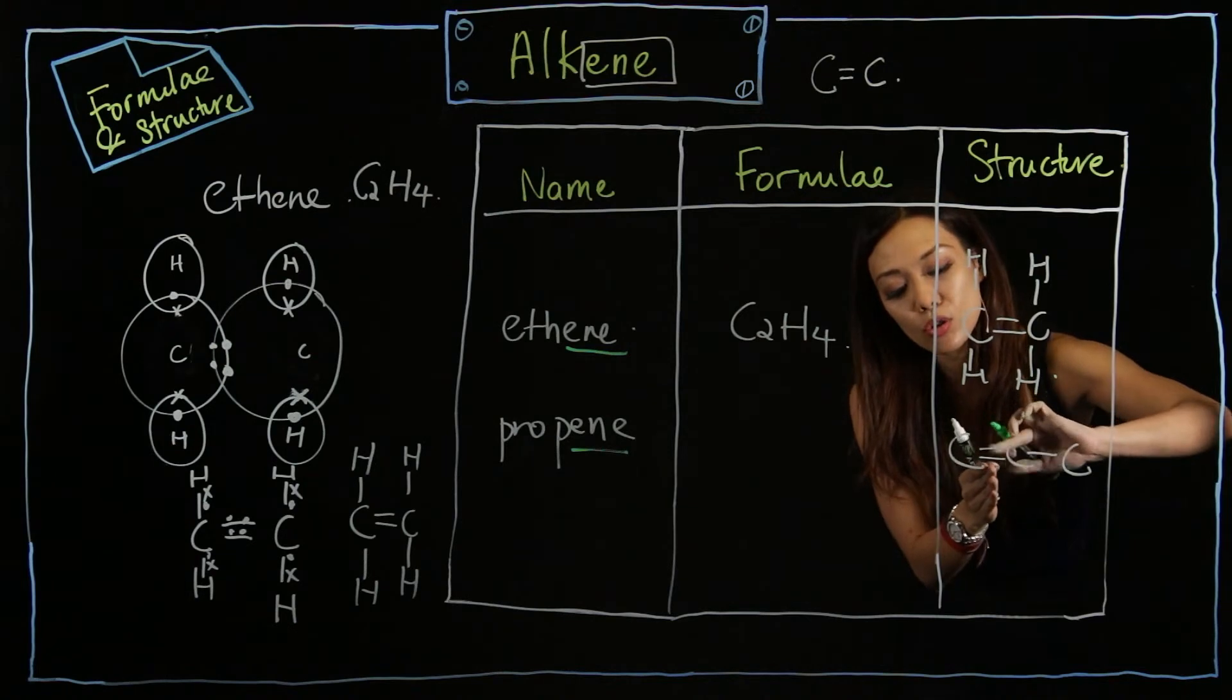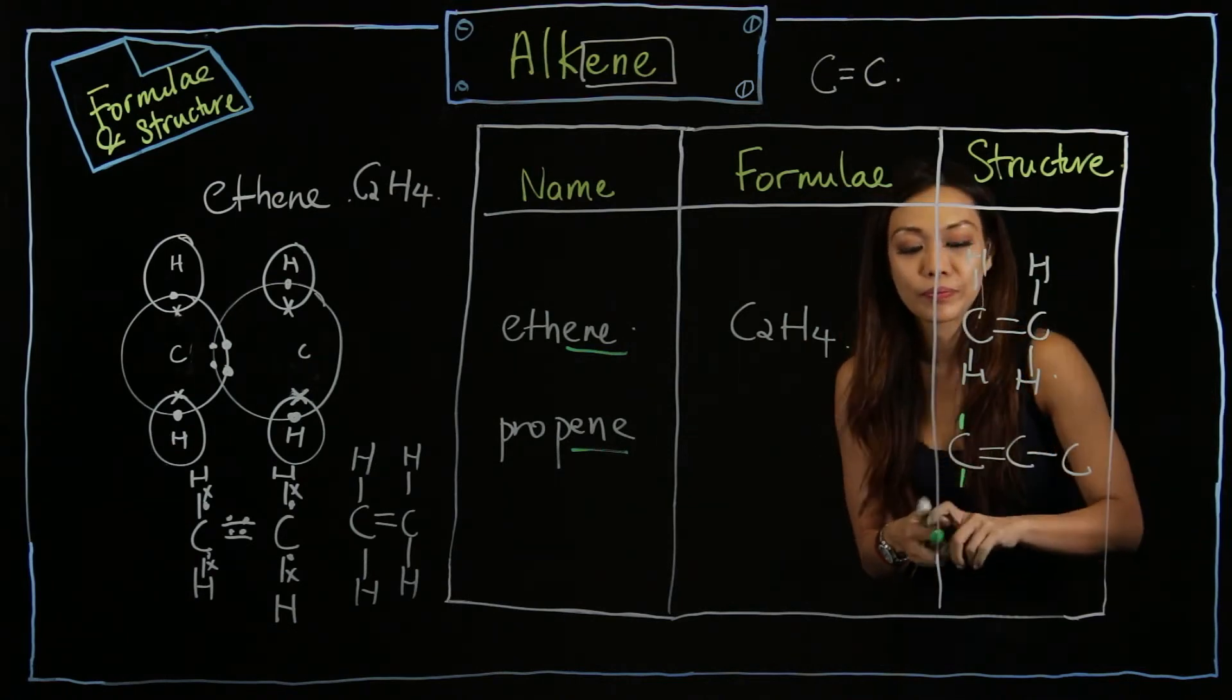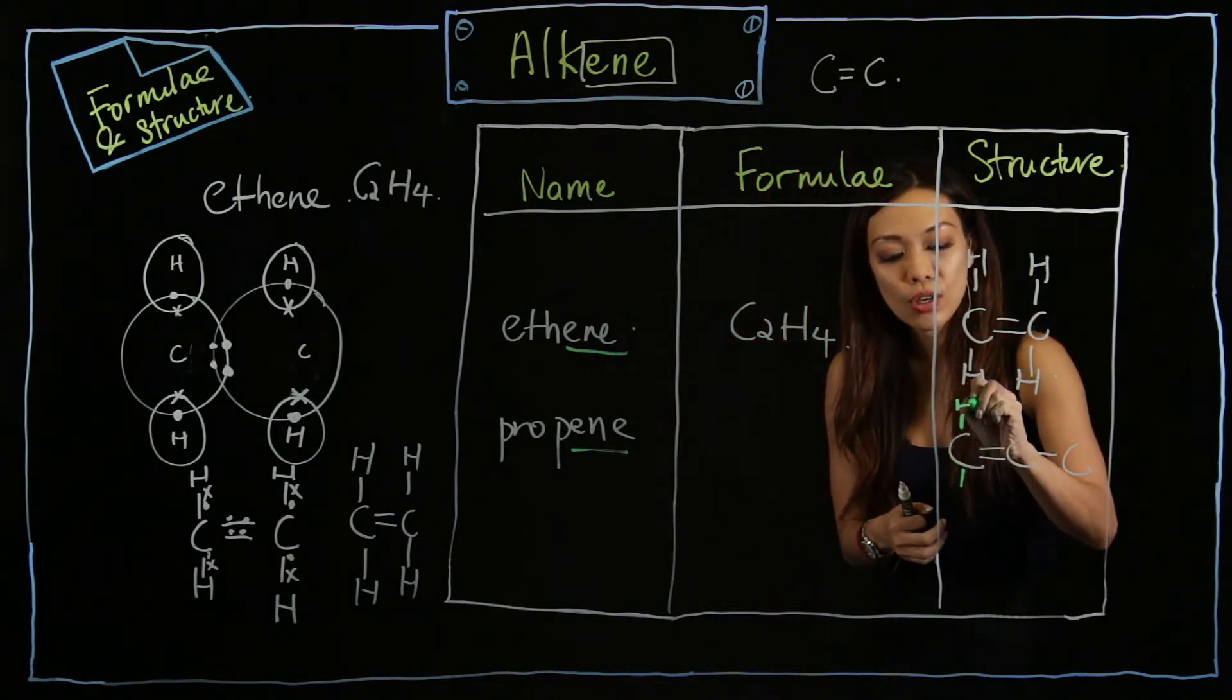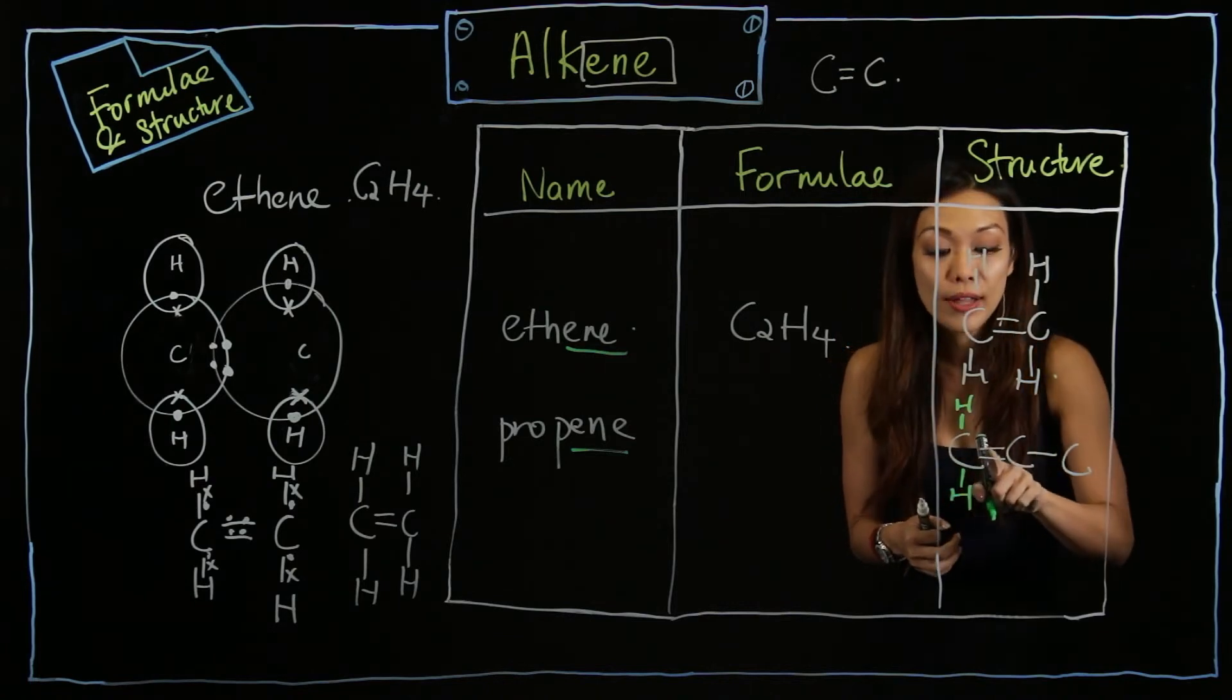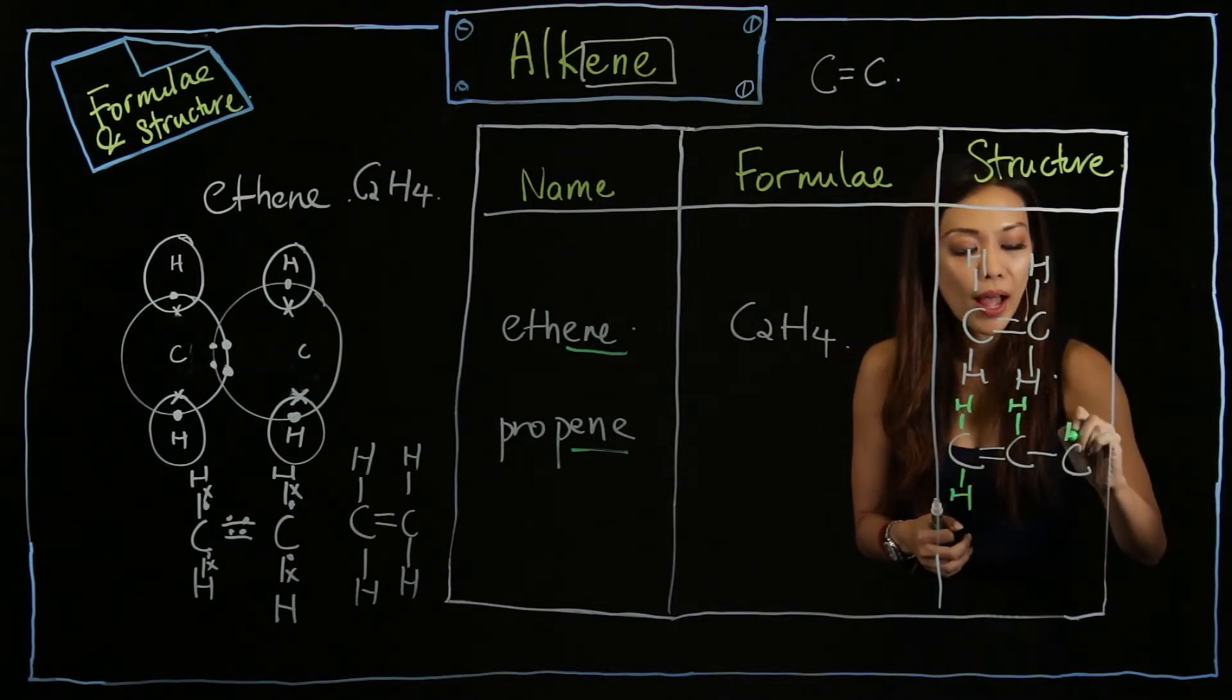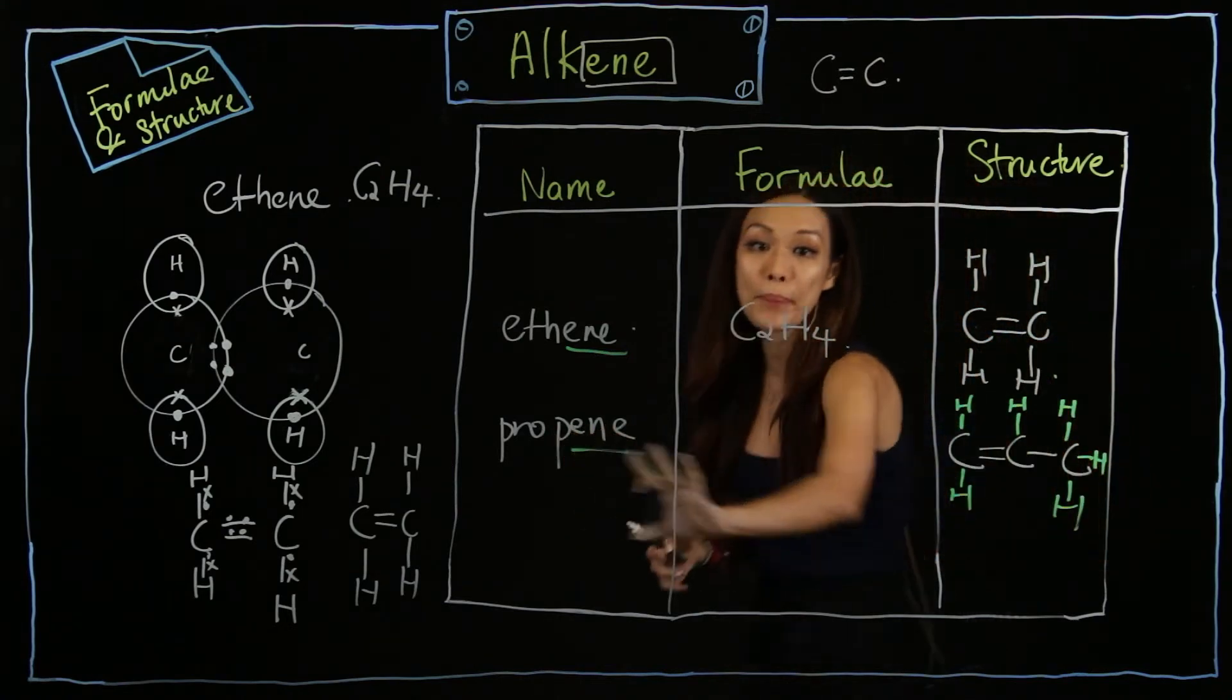So over here - two. How many more to go? There are two more, because one carbon will share four electrons. So one, two, three, four - H, H. One, two, three, so one more H. One here. One, two, three. H, H, H. So this is propene.